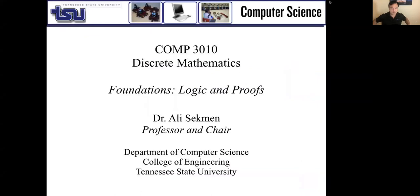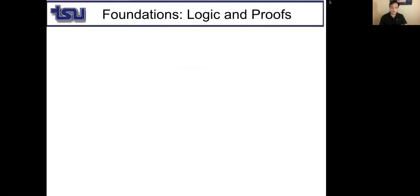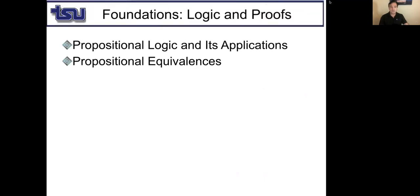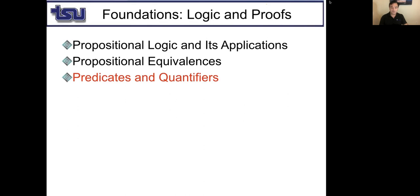This is COM 3010 Discrete Mathematics. We continue with foundations of logic and proofs. So far we have discussed propositional logic and its applications, and propositional equivalences. Today we are going to talk about predicates and quantifiers. We'll talk about existential and universal quantifiers. In the next section we'll talk about rules of inference and use them to prove different mathematical statements.